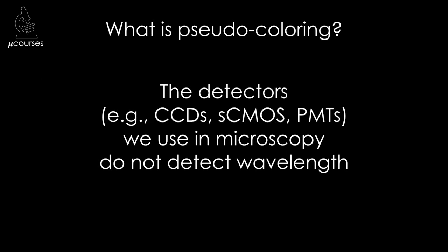The detectors we use in microscopy, such as CCD cameras, sCMOS cameras, and photomultiplier tubes, detect photons, but they don't report the wavelength of the photons.